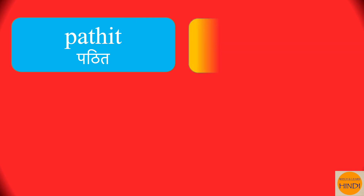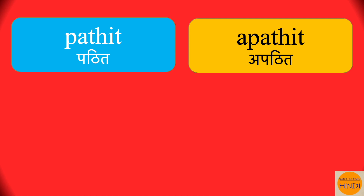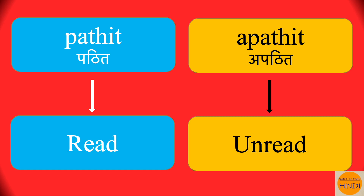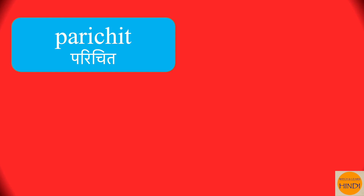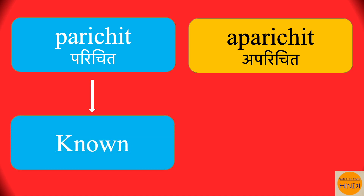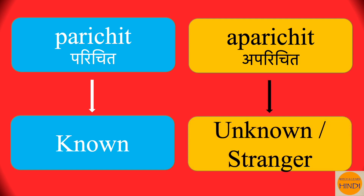Pathit. Apathit. Pathit is read. Apathit is unread. Pathit. Apathit. Parichit is known — as in a known person or known place. Aparichit is unknown, or a stranger if you are talking about a person. Parichit. Aparichit.